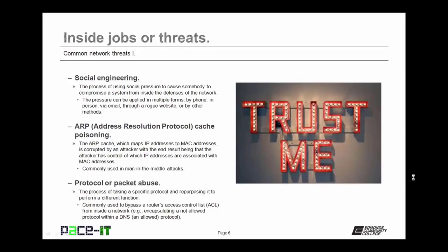ARP cache poisoning is another threat. In ARP cache poisoning, the ARP cache — which maps IP addresses to MAC addresses — is corrupted by an attacker, with the end result being that the attacker has control of which IP addresses are associated with MAC addresses. It's commonly used in man-in-the-middle attacks. Then there are protocol or packet abuse threats. This is the process of taking a specific protocol and repurposing it to perform a different function. Protocol abuse is commonly used to bypass a router's access control list from inside a network — for example, encapsulating a not-allowed protocol within a DNS packet, which is almost always an allowed protocol, in order to get that unallowed protocol out of the network.